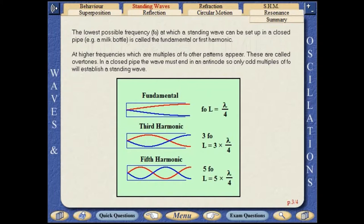In a closed pipe, the wave must end in an antinode, so only odd multiples of the fundamental frequency will establish a standing wave.